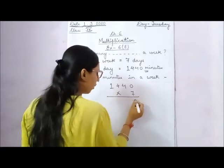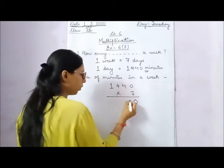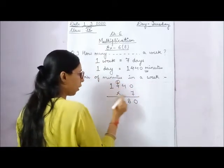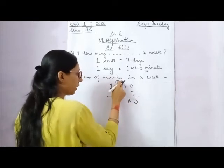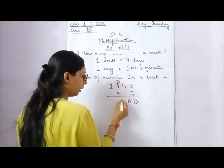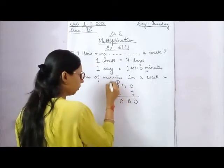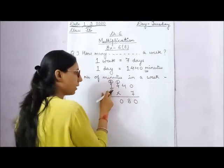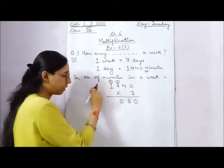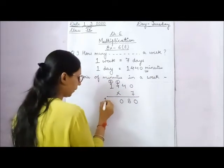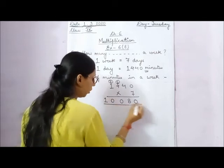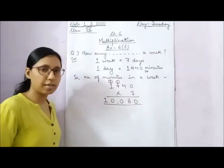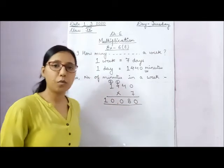Calculating 1,440 multiplied by 7: 7 into 0 is 0; 7 into 4 is 28, write 8 and carry 2; 7 into 4 is 28, plus 2 is 30, write 0 and carry 3; 7 into 1 is 7, plus 3 is 10. So there are 10,080 minutes in a week.